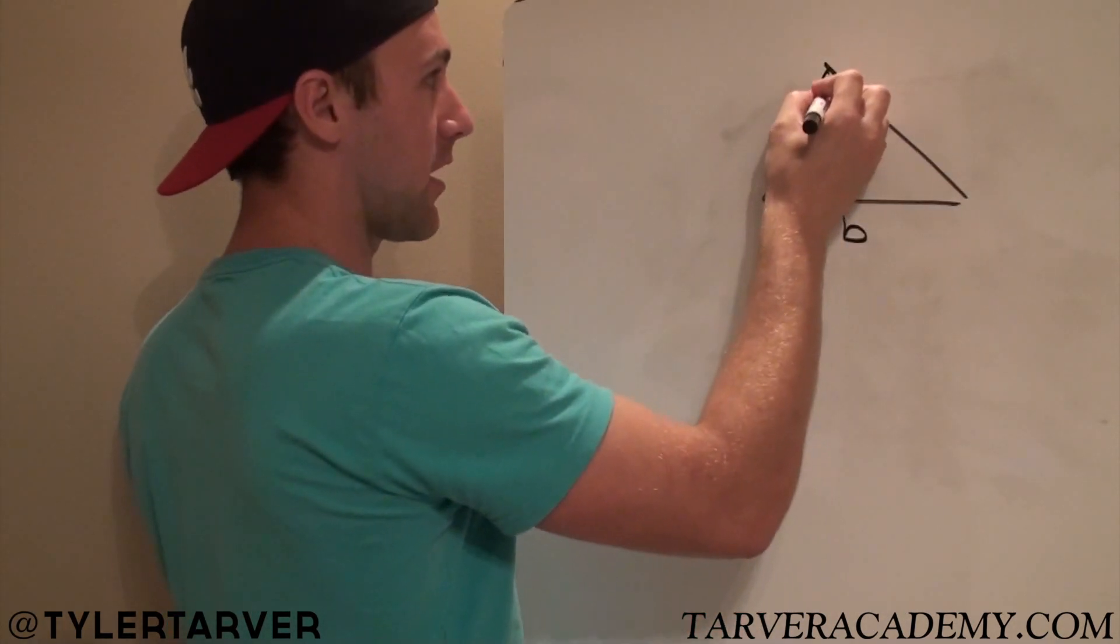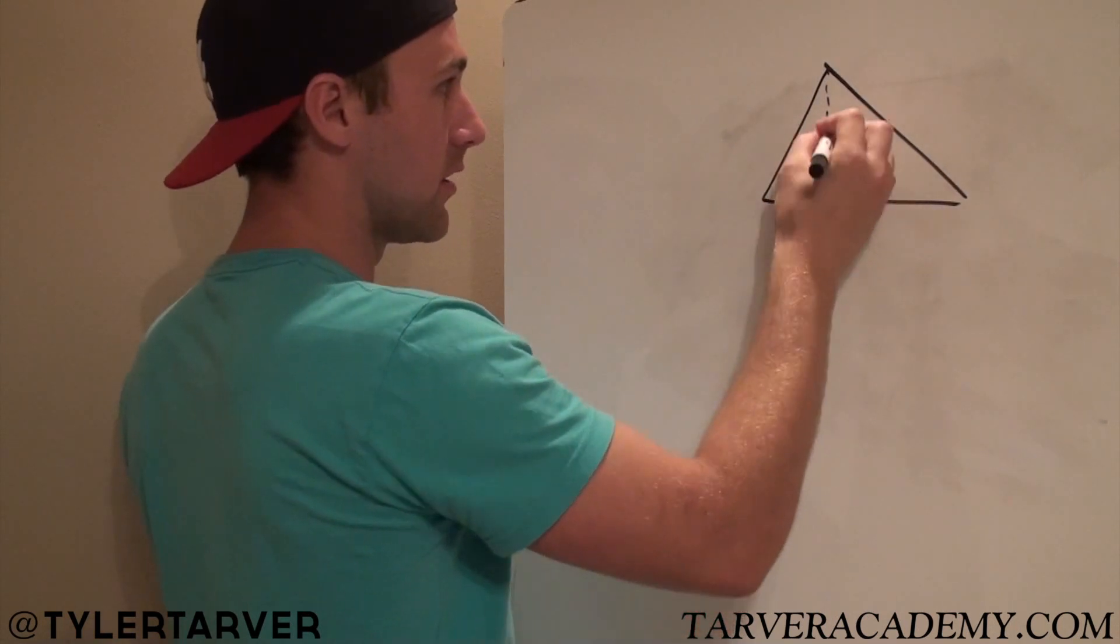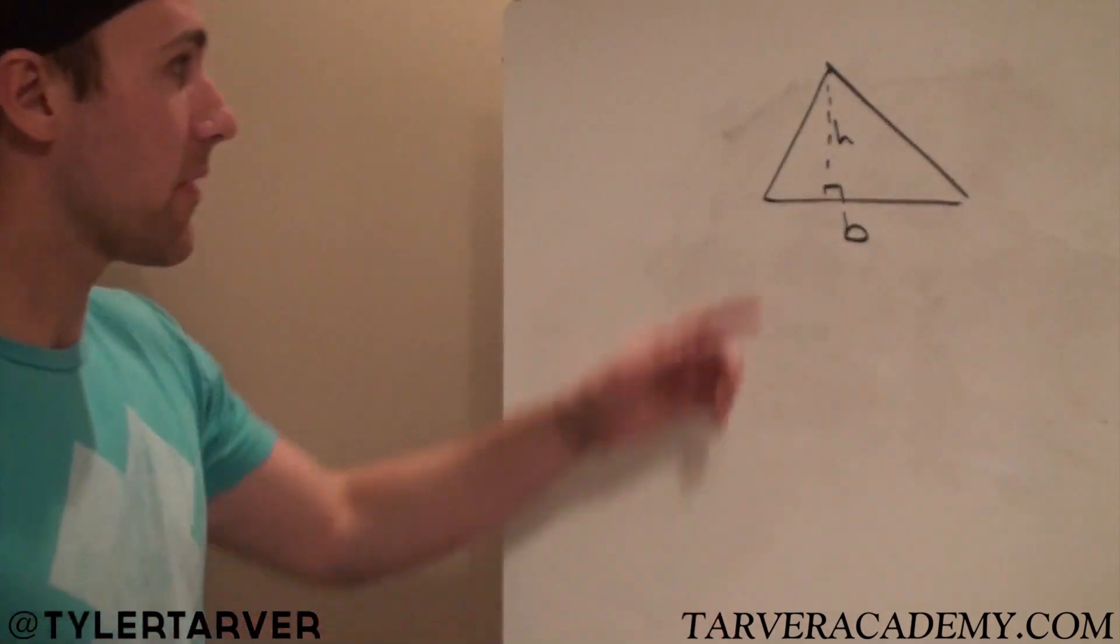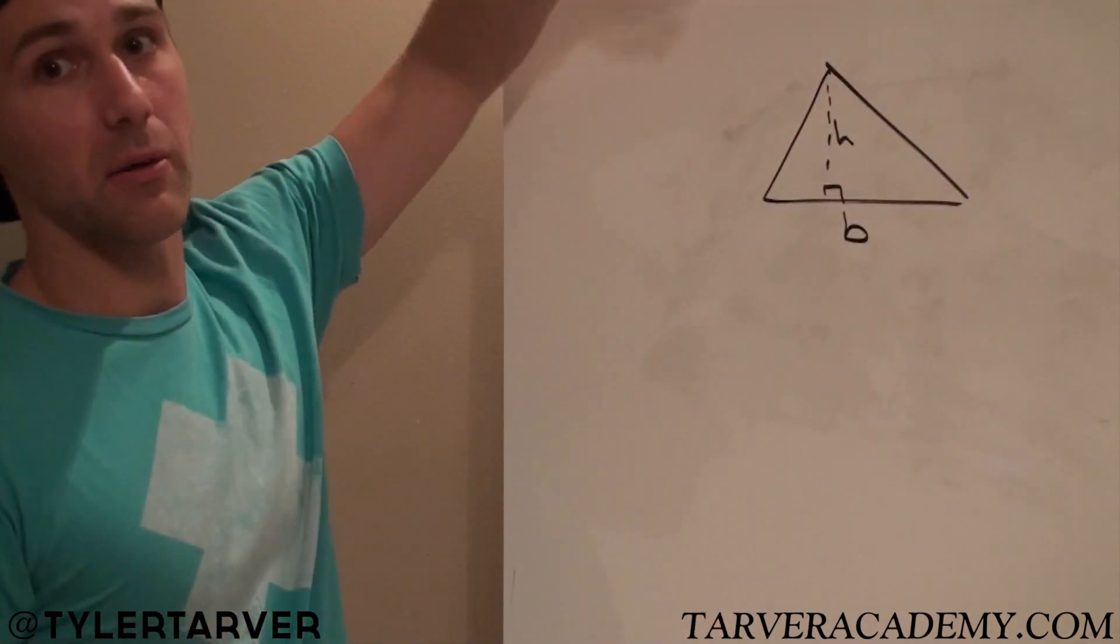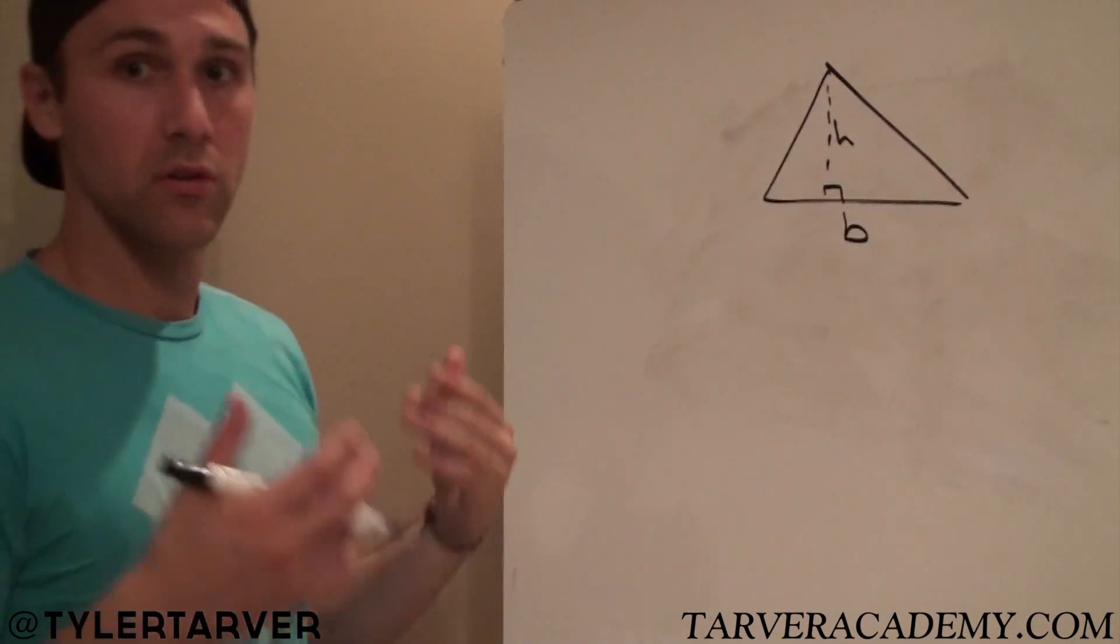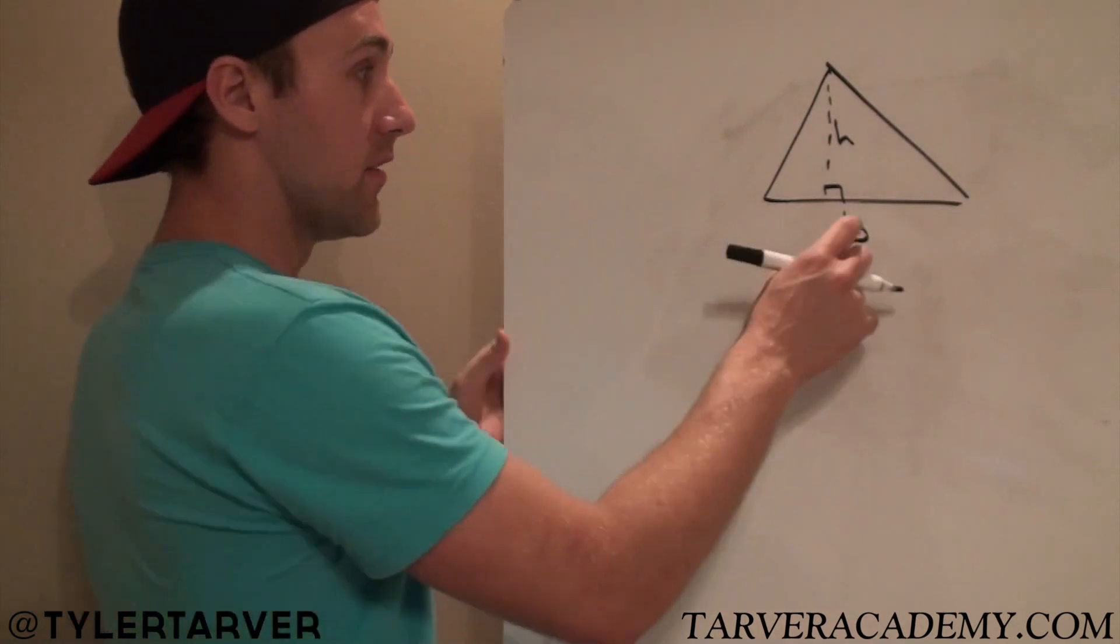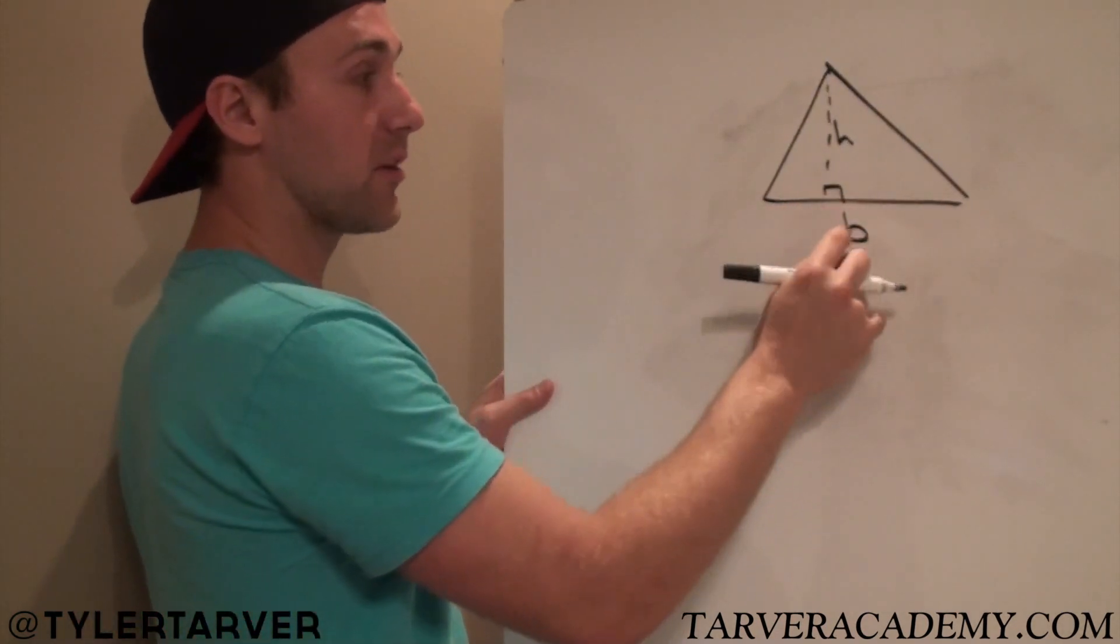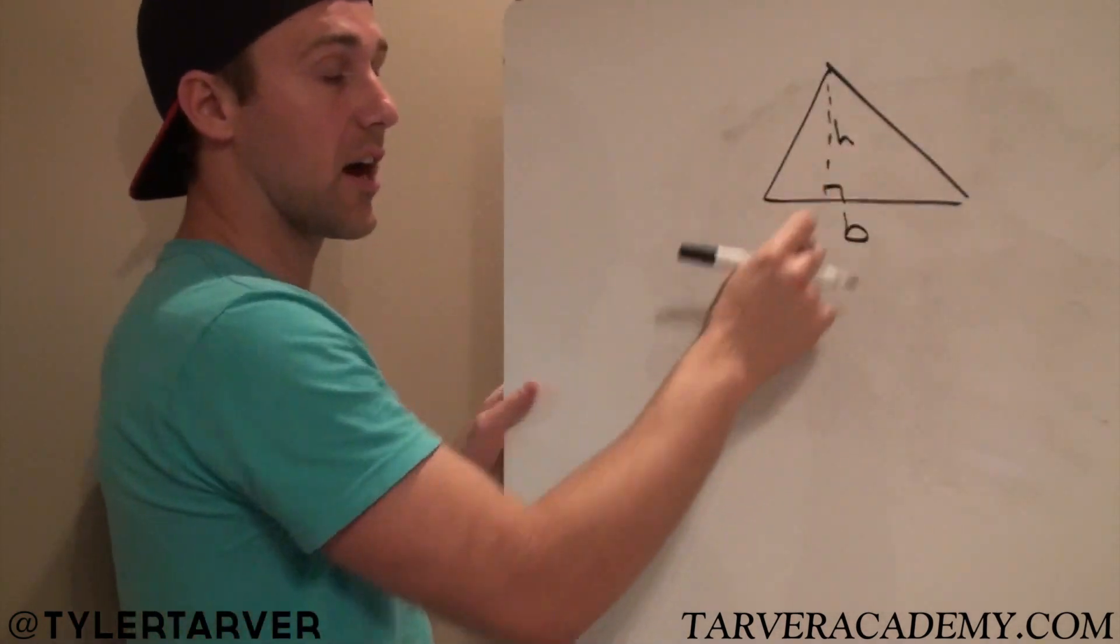That'll be our base and this will be our height. Just like in a parallelogram, the height has to come from side to side, in a parallelogram. This is coming from the opposite angle down to another side. That side it hits at a right angle is your base and that line is your height.